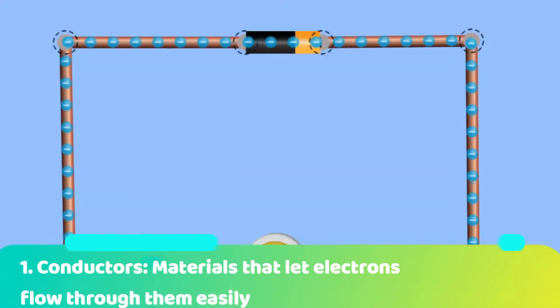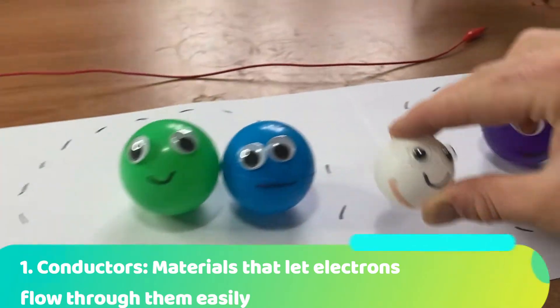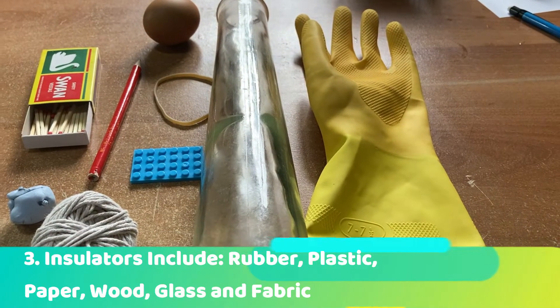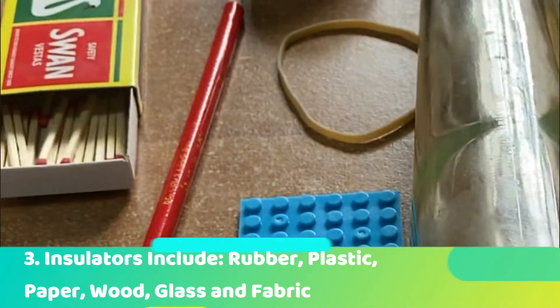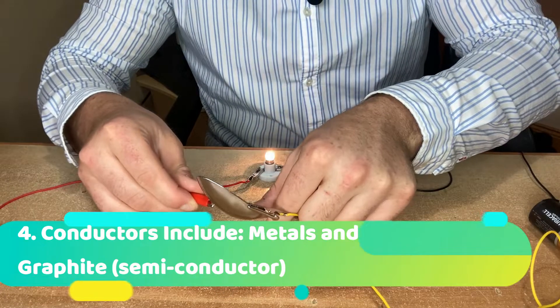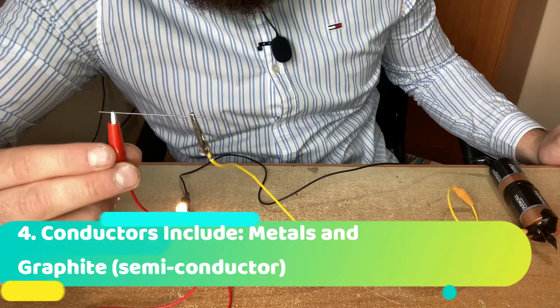Good conductors of electricity are materials that let electrons flow through them easily. Bad conductors or insulators are materials that don't let electrons flow through them easily. Bad conductors of electricity or insulators include rubber, plastic, paper, wood, and fabrics. Good conductors of electricity include metal or graphite, which conducts electricity a little bit. And so we've come to the end of our video about conductors and insulators.